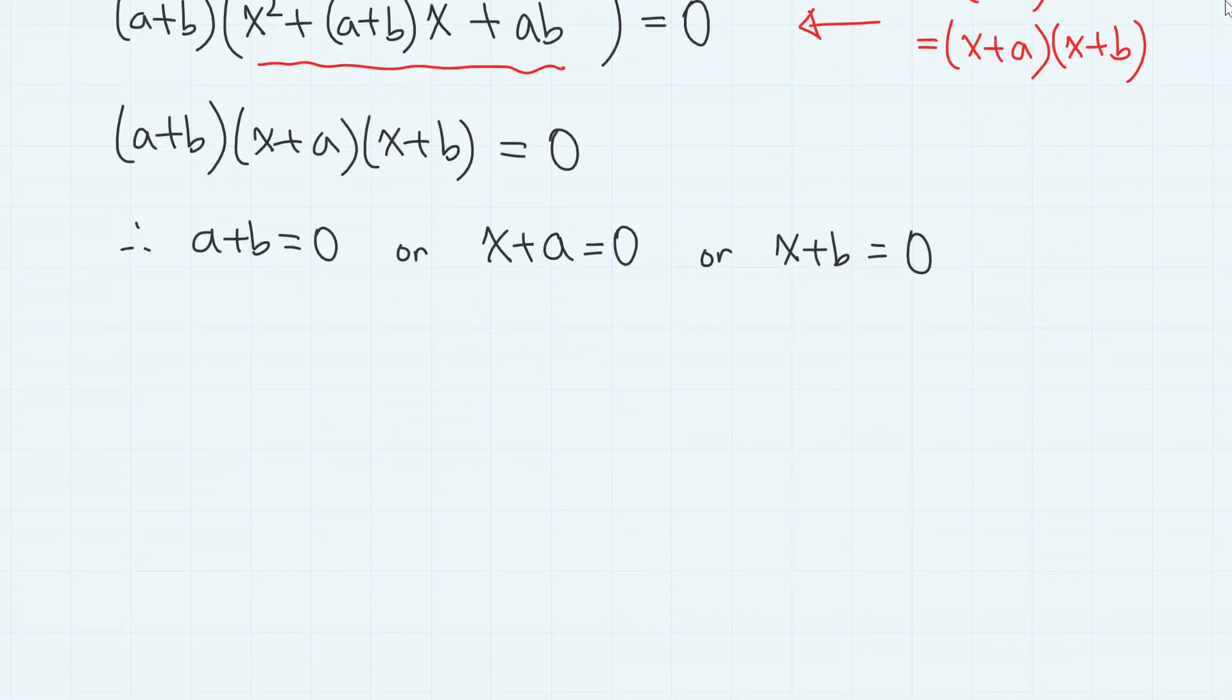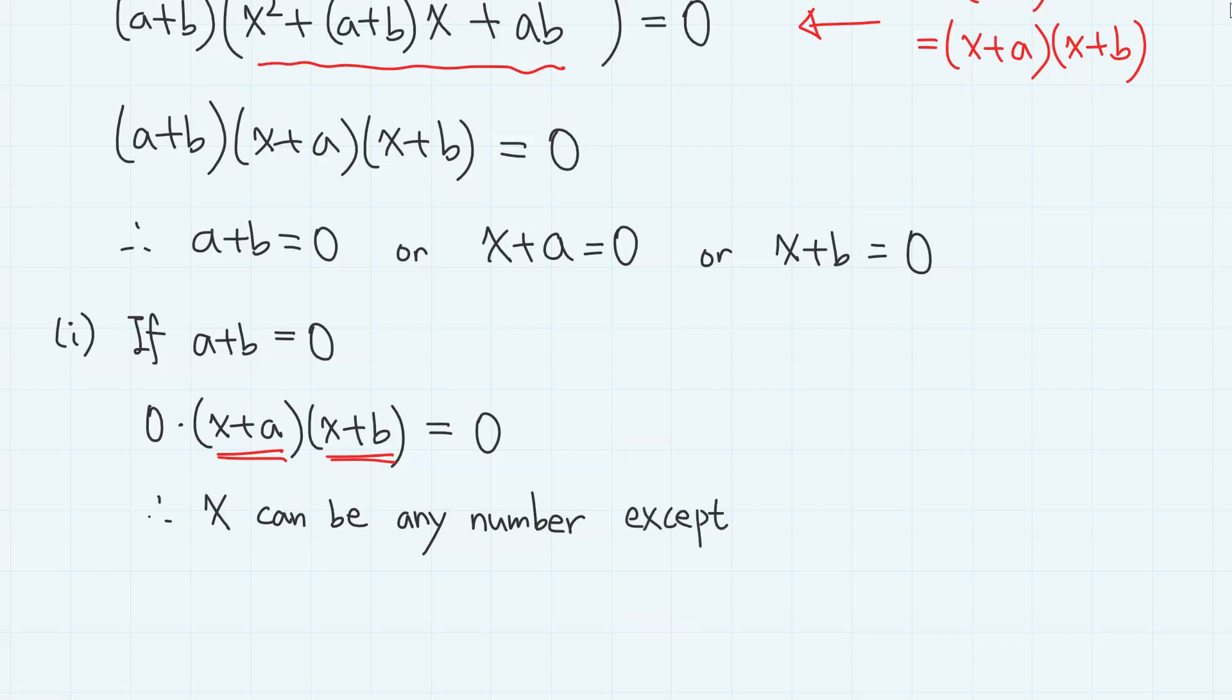And here's the important part. If a plus b equals 0, then the equation becomes 0 times x plus a times x plus b equals 0. So these x plus a and x plus b can be whatever values, meaning that x can be any number. Well, x can be any number except 0.